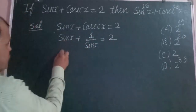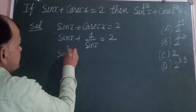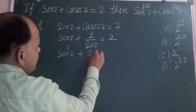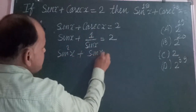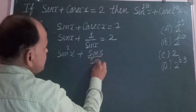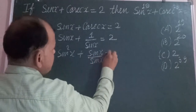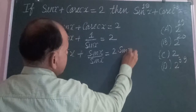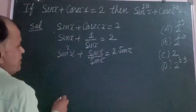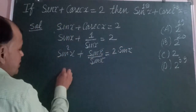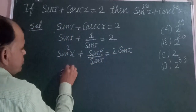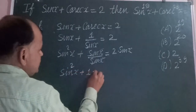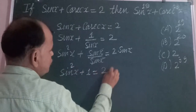So this gives us sin squared x plus sin x over sin x equal to 2 times sin x. The sin x divided by sin x cancels to 1, so we get sin squared x plus 1 equal to 2 sin x.